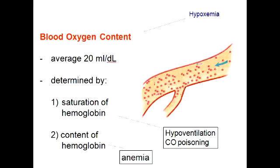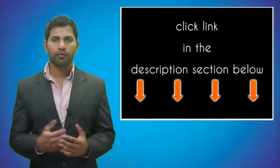What is the equation to calculate the oxygen delivery to tissue? Oxygen delivery to tissue can be determined by the cardiac output times the oxygen content of blood.